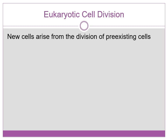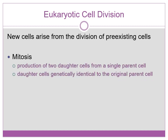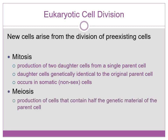With eukaryotic cell division, we have new cells arising from pre-existing cells. This includes mitosis, which is the production of daughter cells from a parent cell that are genetically identical to the parent cell. It occurs in somatic cells. Meiosis is the production of gametes or sex cells that contain half the genetic material of the parent cell.